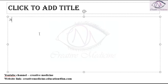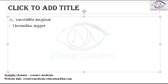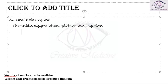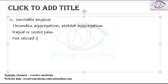Third we have unstable angina. In unstable angina, pain is present even at rest. It can be due to thrombin aggregation or platelet aggregation. Because of this, the patient has rapid or severe pain which is not relieved by rest.